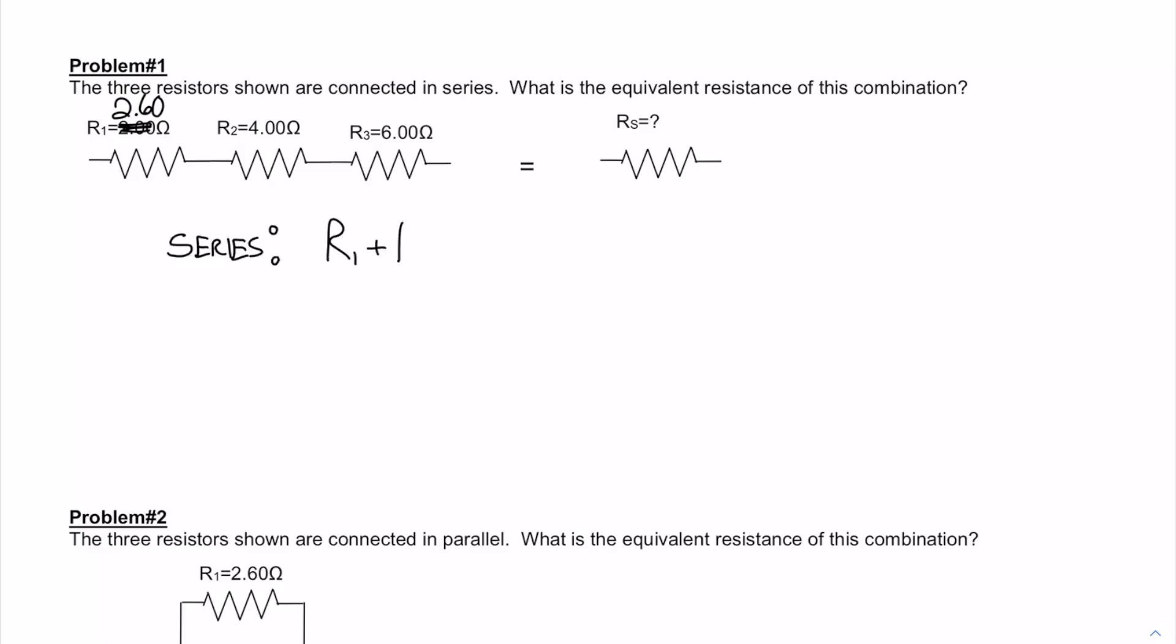Now in series, resistors just add up. So for these three resistors in series you could replace it by an equivalent resistance that's just the sum of R1, R2, and R3. So in this case the equivalent resistance is just 12.60 ohms.